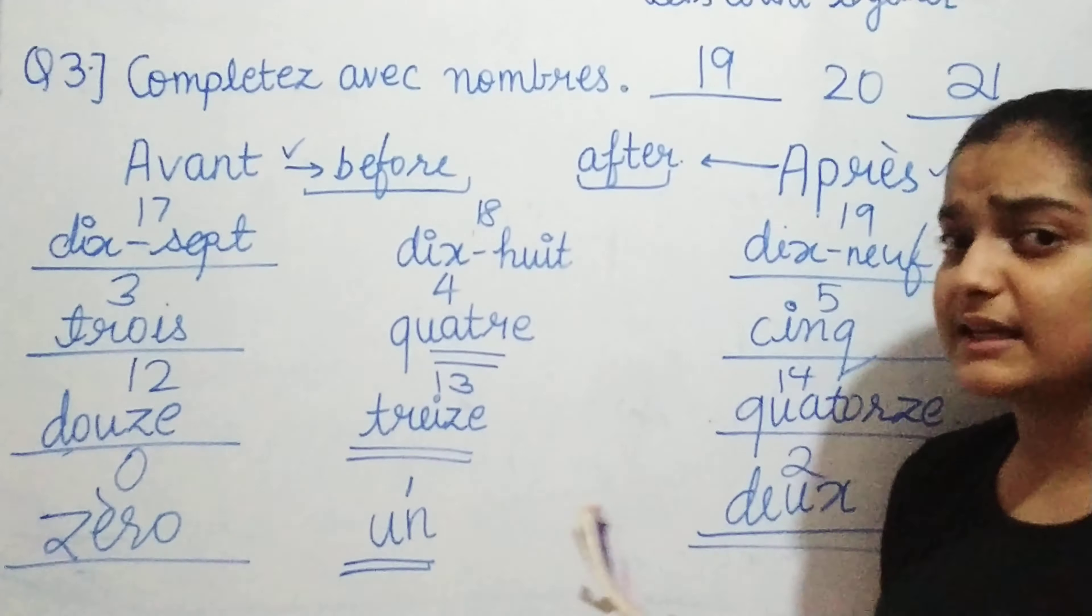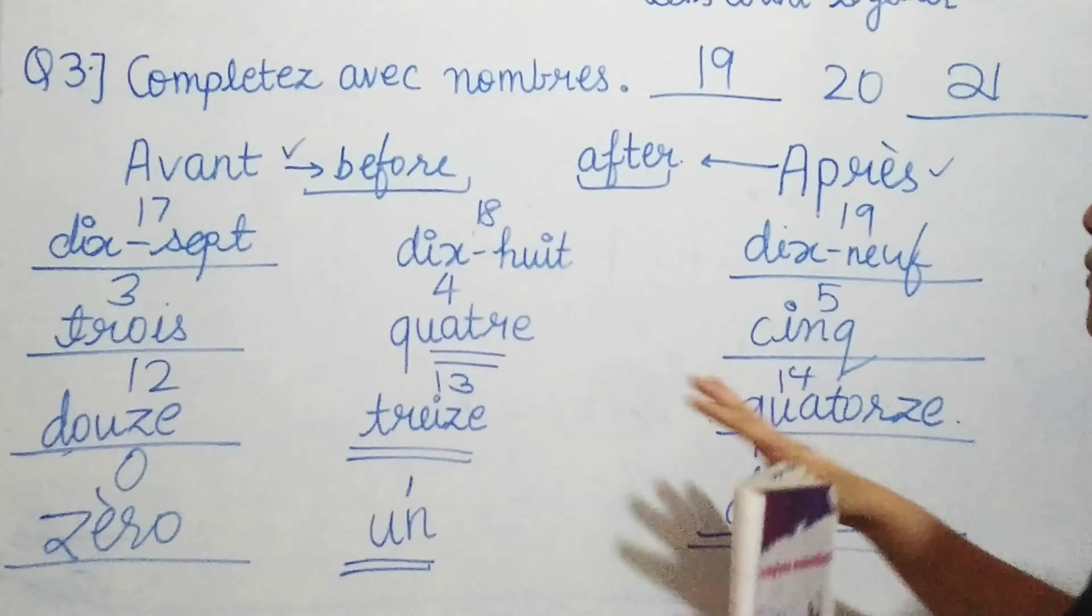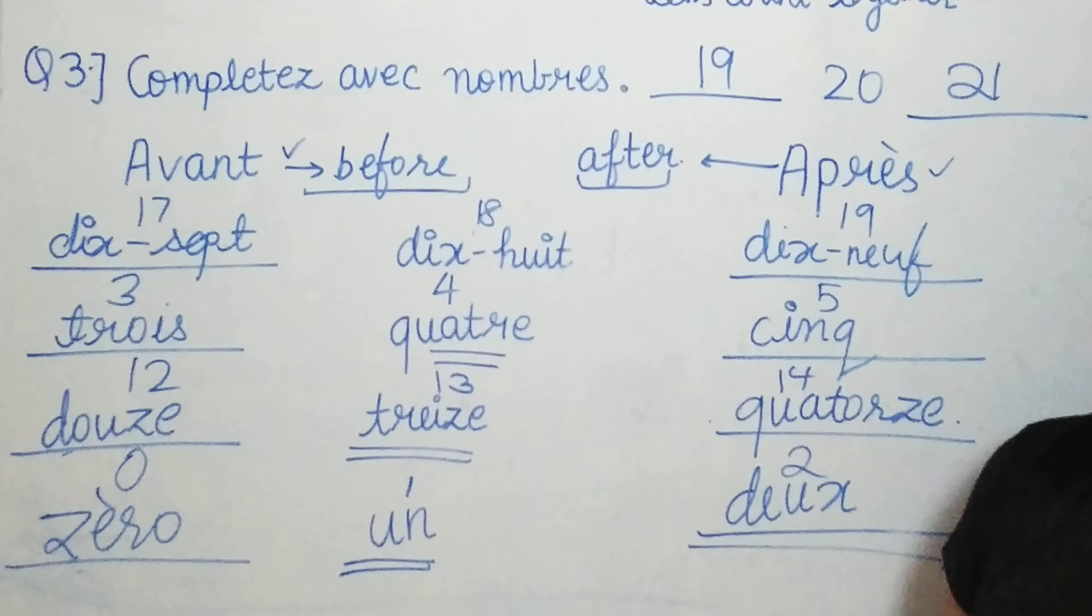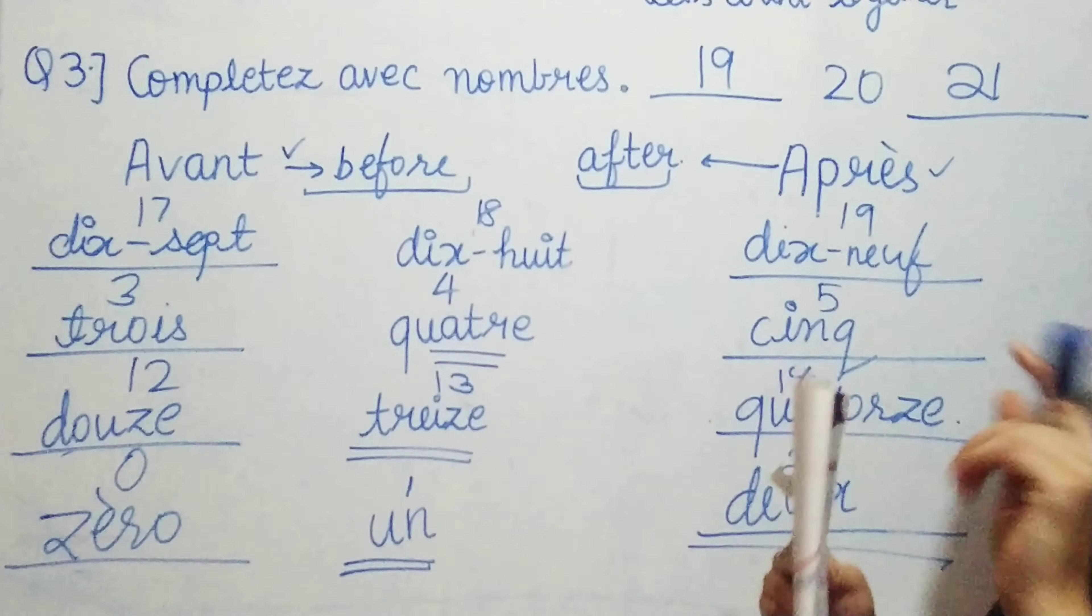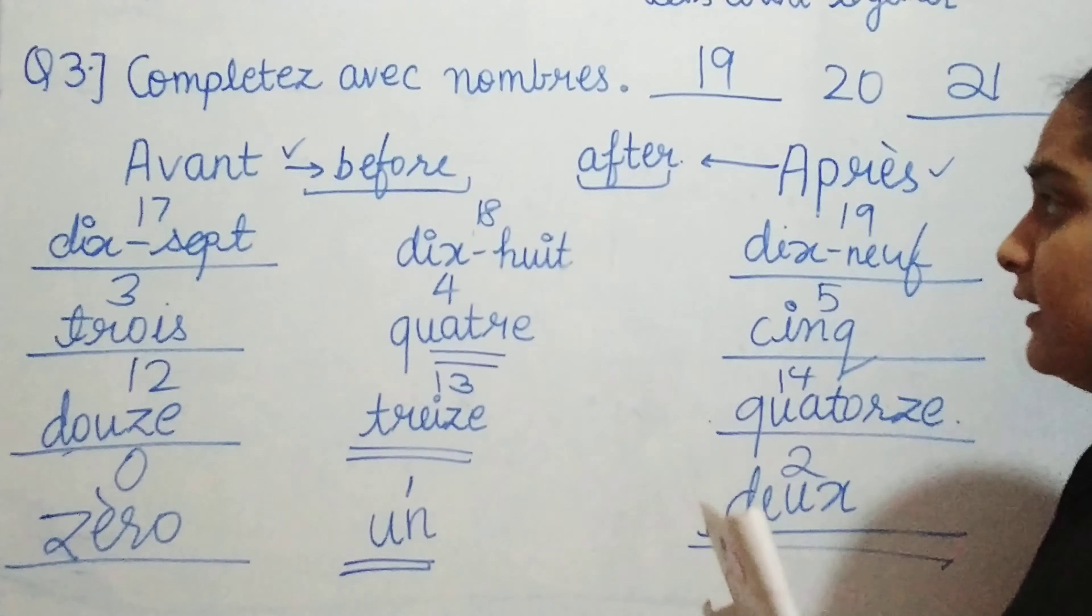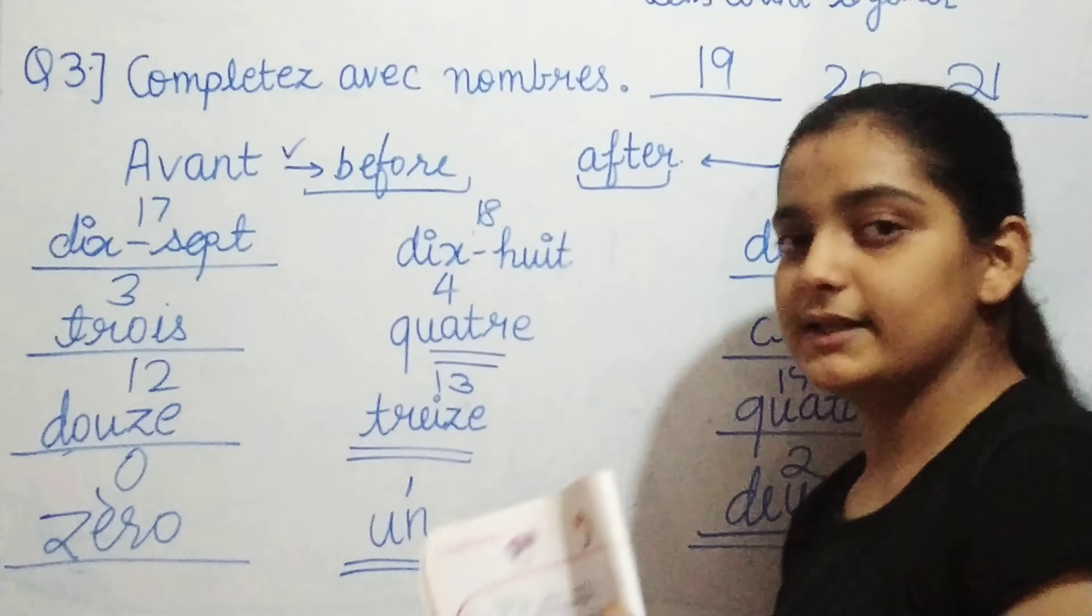So this was very easy, right? For this, you just require to learn the counting of one to twenty. Once you know counting up to twenty, you can solve this extremely easily. So this was question number three. Now let's move to the next question.